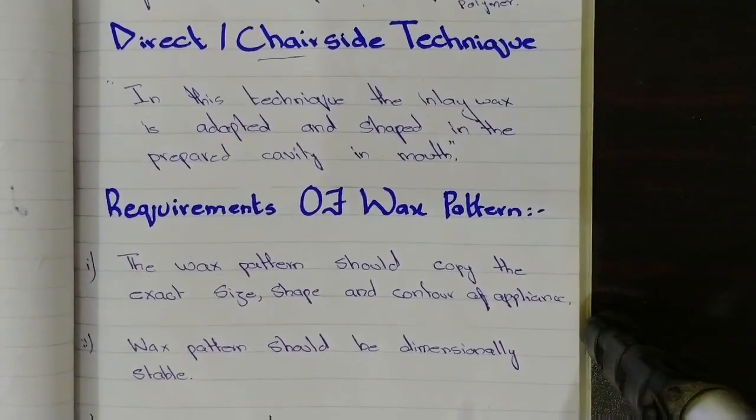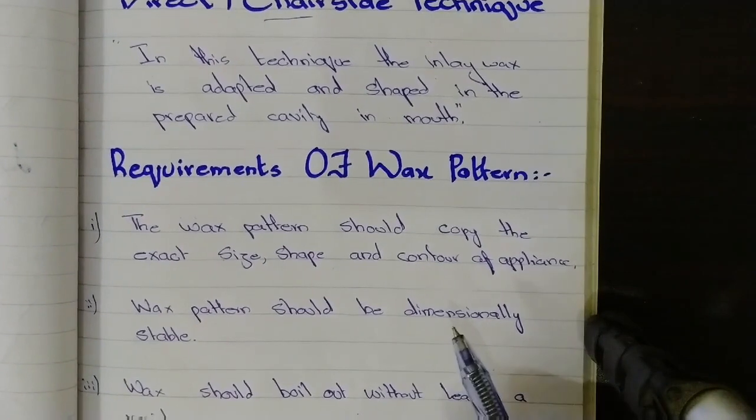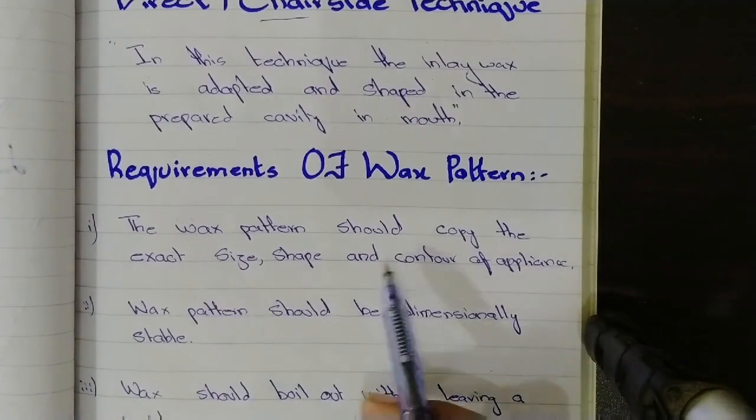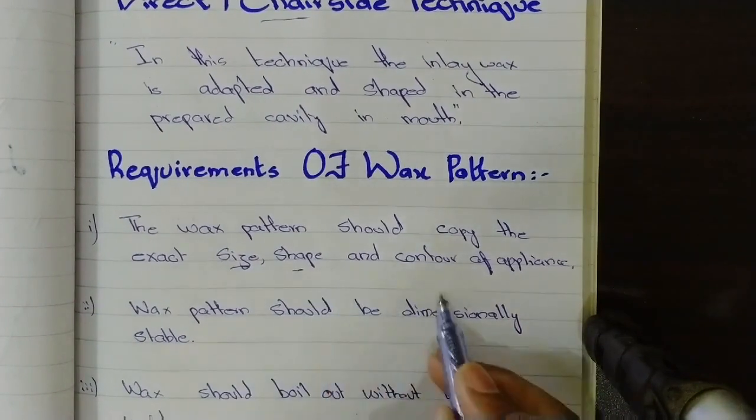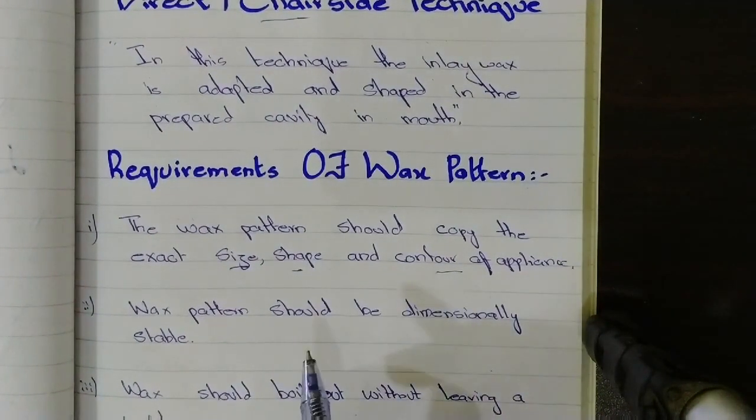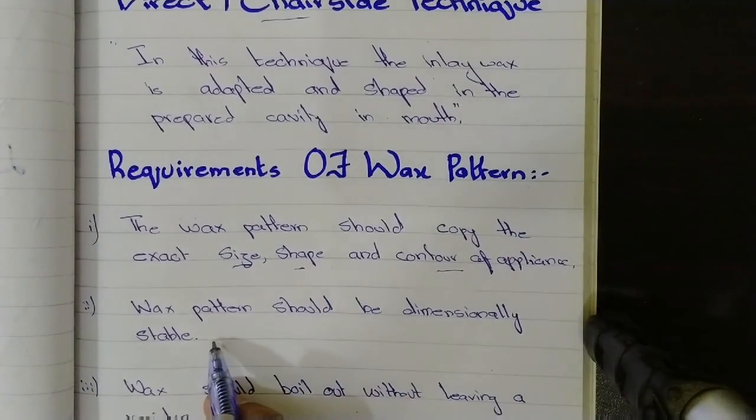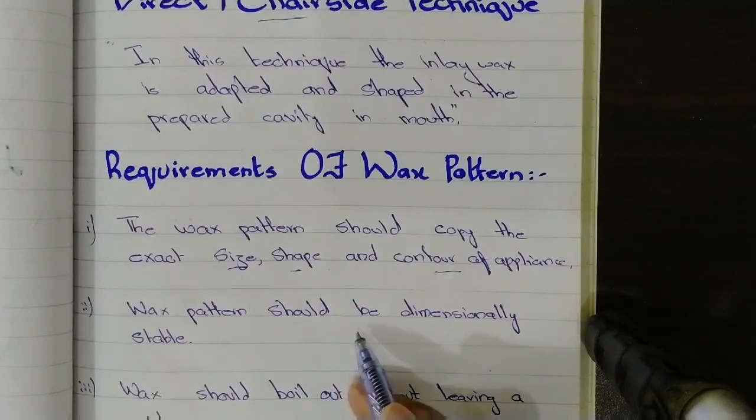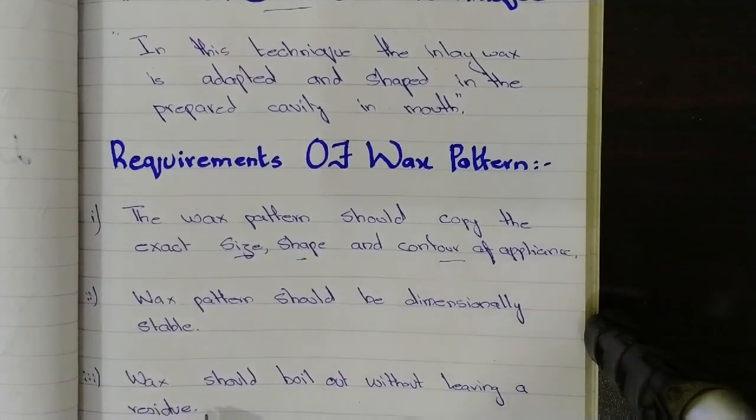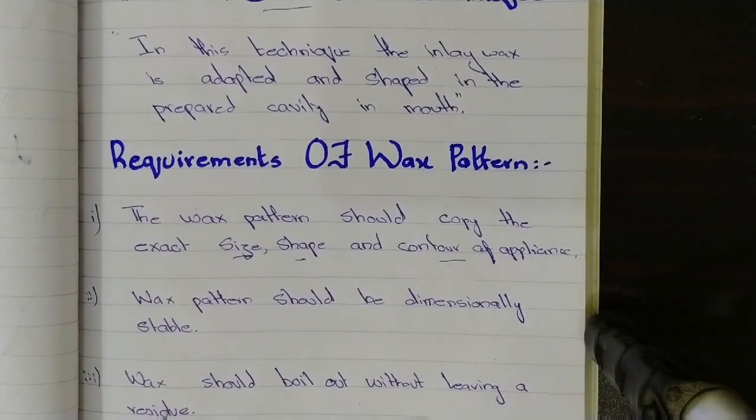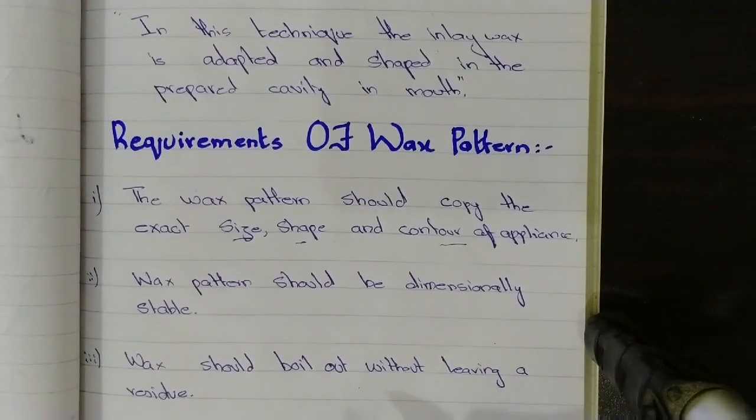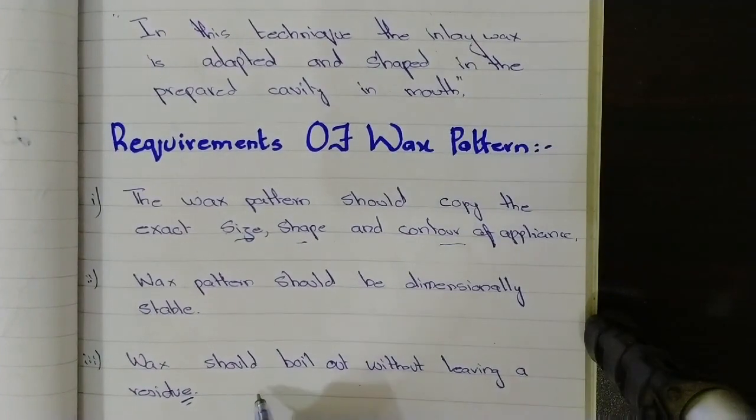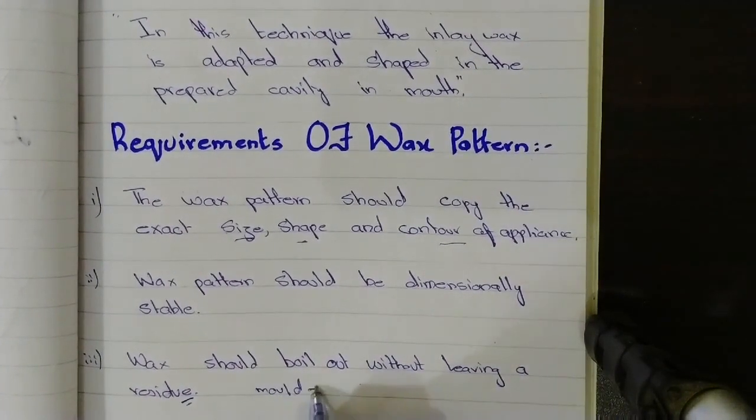Now the requirements of the wax pattern. All dental materials have certain requirements. The requirements of the wax pattern are: the pattern should copy the exact size, shape and contour of appliances. These three points are very important to memorize for the OSPE purpose. Now the wax pattern should be dimensionally stable. What do they mean by dimensionally stable is that the wax should not undergo dimensional changes before and after setting. Now the wax should boil out without leaving a residue. That is when we perform the lost wax technique, there should be no residue left. Otherwise your appliance or your cast or your mold will have porosities.